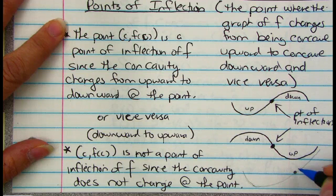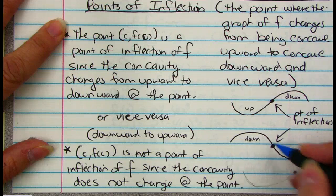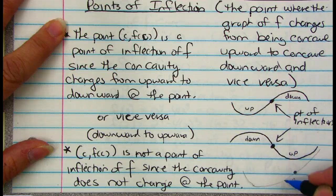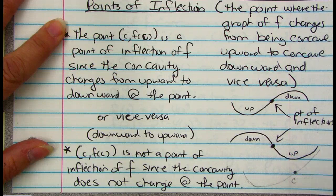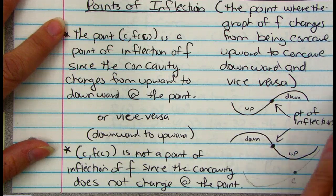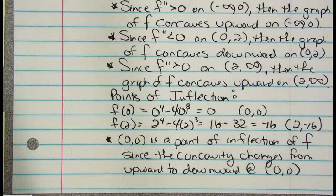So how can I tell, on either side of this point C? It must change from down to up. This one here is still up to up — the concavity is still up to up. How do we do this in a math problem? Let's do one.